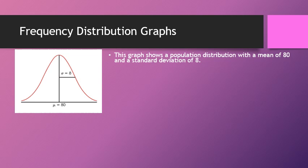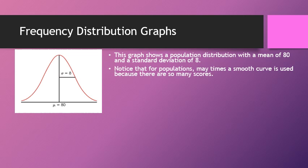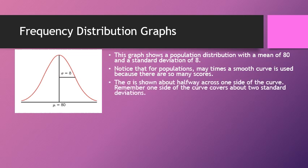You would draw a line down the middle of the graph showing where the mean is, and then for the standard deviation of 8, you would draw a line about halfway over to the right showing the standard deviation of 8. Many populations, because they have so many scores, we use a smooth curve instead of just a regular histogram. The standard deviation is shown about halfway across one side.